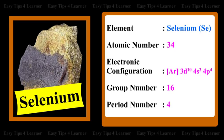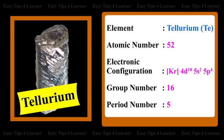For the element Tellurium: atomic number 52, electronic configuration [Kr] 4D¹⁰ 5S² 5P⁴, group number 16, period number 5.